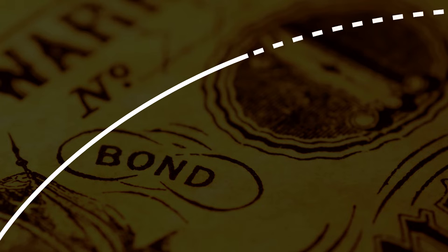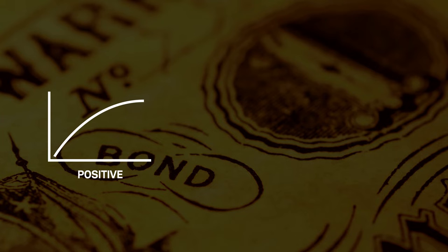The yield curve has three shapes: upward sloping or positive, downward sloping or inverted, and flat.